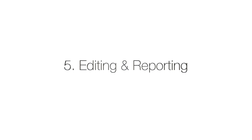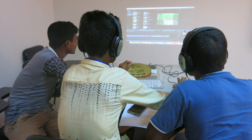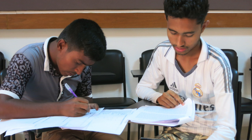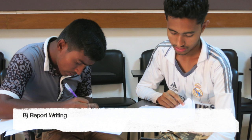Phase 5: Editing and Reporting. The trainees finish the video by including the missing topics, as well as some titles and music. If the evaluation took place on behalf of an NGO, the team could summarize their process, their findings and their lessons in a short report.